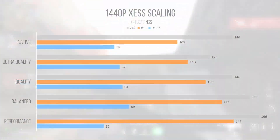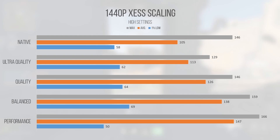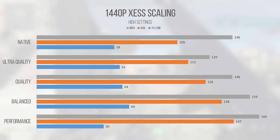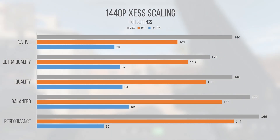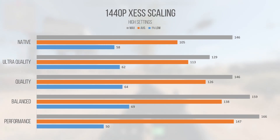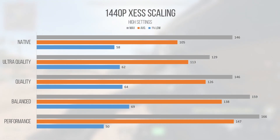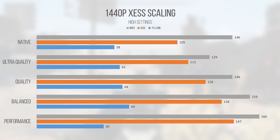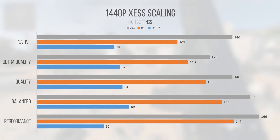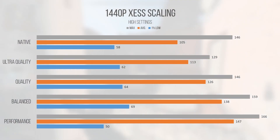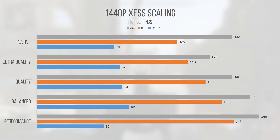At 1440p, the scaling observed aligned much more closely with the expectations set forth by the technology, probably due to us not exposing a CPU bottleneck as directly. The averages scaled quite nicely as we lowered the internal resolution, as did the 1% lows, however with a lower percentage. For all the settings at 1440p, the image upscale quality was noticeably improved over 1080p upscales, which comes naturally with increasing the internal render resolution, but also seems to work better with more information available.